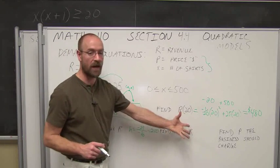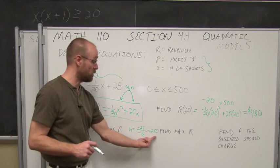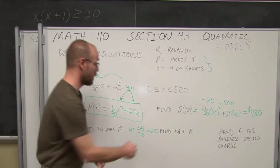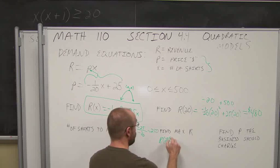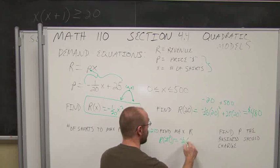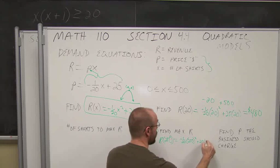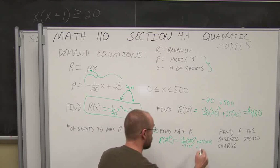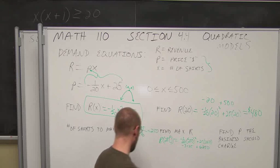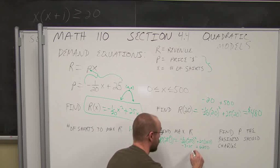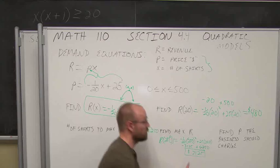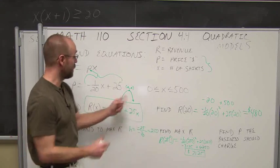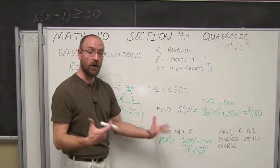The next question asks us to find the maximum revenue. I evaluate R(250): negative 1/20 times 250 squared plus 25 times 250. That gives negative 3,125 plus 6,250, so the maximum revenue is $3,125. This is the vertex k-value — the maximum amount of money I can earn selling these shirts.